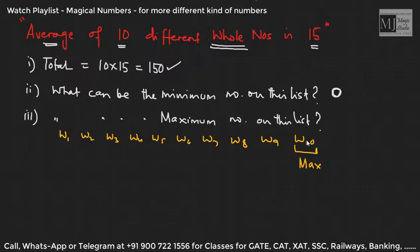Now the keyword different comes into picture. All the numbers we have taken are different numbers. So let us assign the smallest nine whole numbers to these nine positions, and that would be zero.